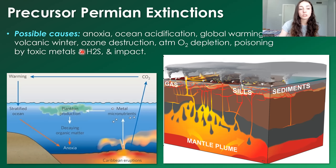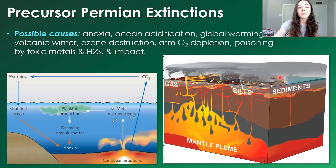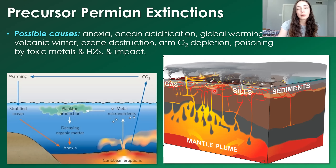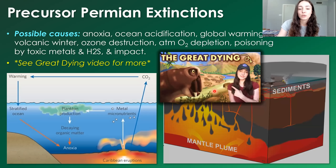Toxic metals can be released by volcanoes, and mercury spikes have been observed coinciding with the Permian and other mass extinctions. There was potentially even an impact that contributed to triggering climate changes during the end Permian. However, the major trigger was large igneous province eruptions in the Siberian Traps, which I discuss in detail in my Great Dying video.